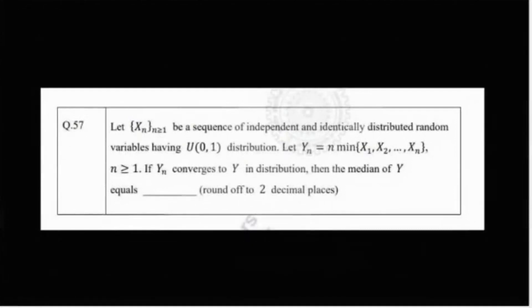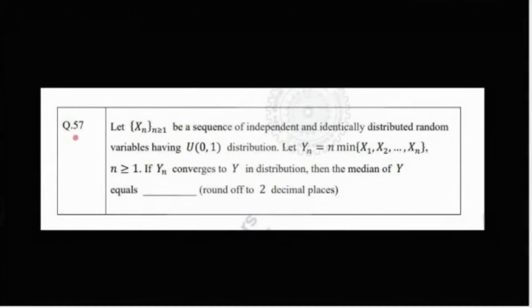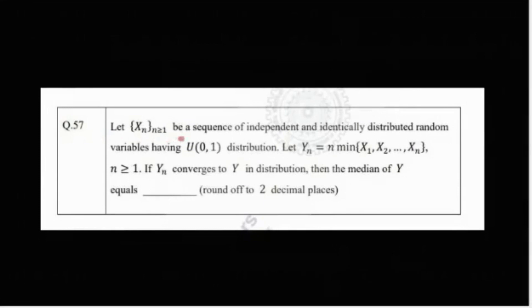Welcome to Jinta Statistics and Data Science. Today we are going to solve this problem from IIT JAM MS 2022, problem number 57. The problem says: let Xn be a sequence of independent and identically distributed random variables having Uniform(0,1) distribution. Let Yn equal n times the minimum of X1 through Xn, for n greater than or equal to 1. If Yn converges to Y in distribution, then find the median of Y.